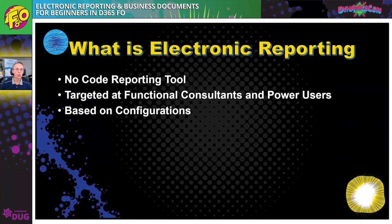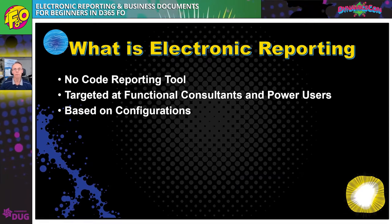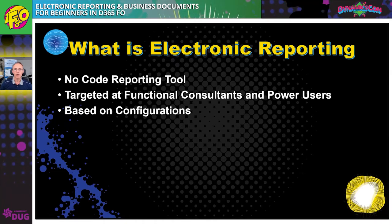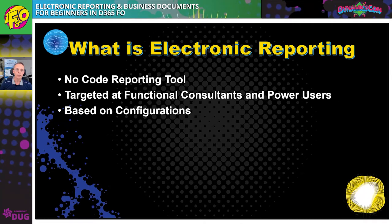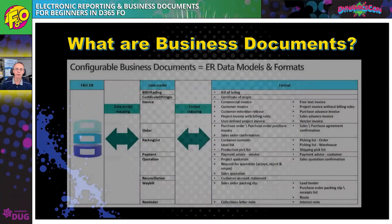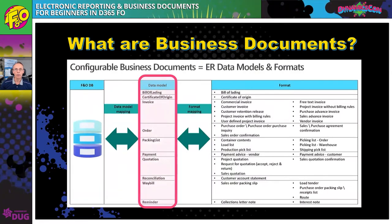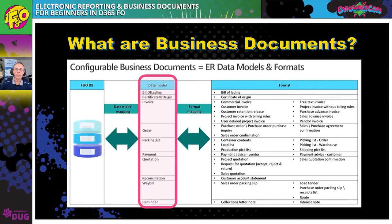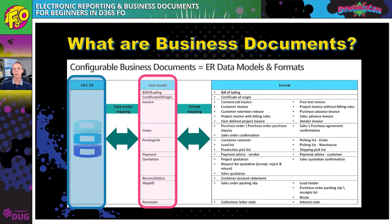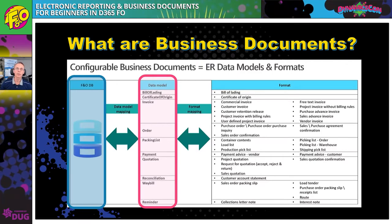What is Electronic Reporting? First of all, this is a no-code reporting tool targeted at people who deal with reports — to be able to design them and choose which data they want to use. Electronic Reporting by itself is not new; it was already used in business-to-government and business-to-business reporting. Everything depends on configurations. Business Documents are an addition on top of Electronic Reporting. In Electronic Reporting we have a data model, which is the heart of everything — we set the data structure there.